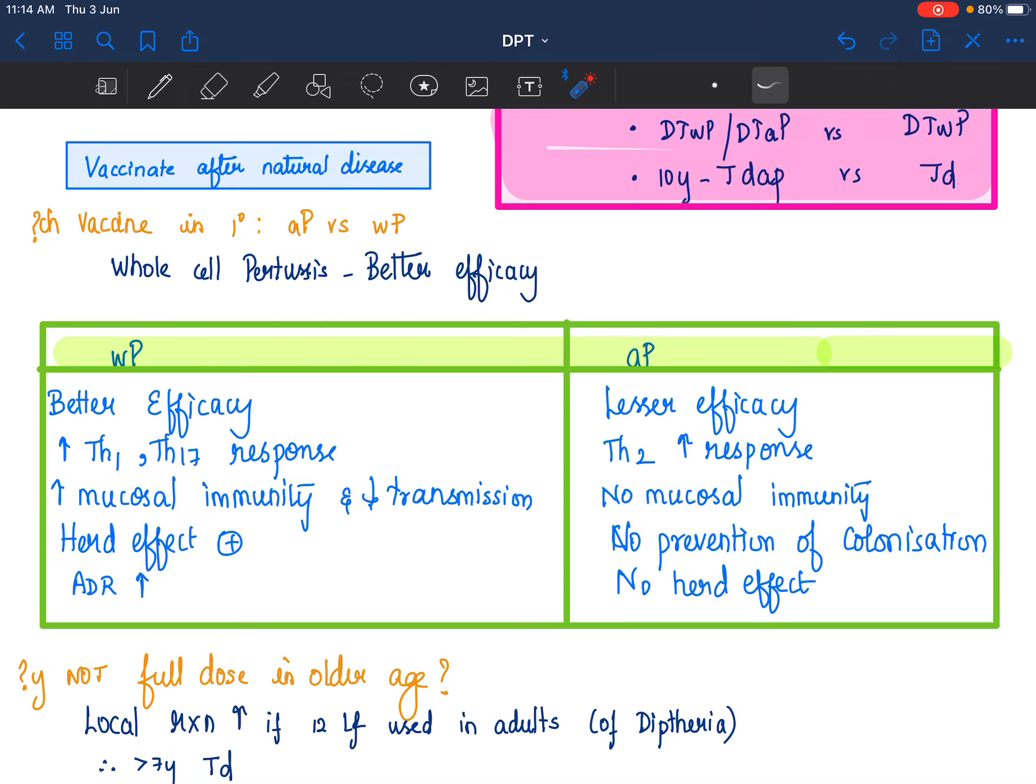If you look at the studies where they have compared whole cell pertussis versus acellular pertussis vaccination in a country as a whole, the recent resurgence of pertussis is possibly secondary to switching over to acellular pertussis vaccine.